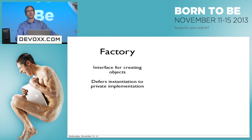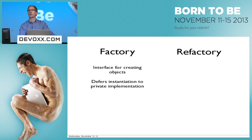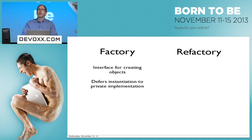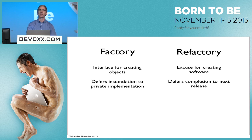Moving on, we have the factory pattern, which is of course an interface for creating objects without exposing the implementation details. We defer the instantiation of these objects to subclasses or to private implementations. One of the most common patterns in software development, used since the founding of our industry, is of course the refactory pattern. In this pattern we practice such things as renaming, changing class hierarchies, changing packages, and just completely rewriting code from scratch for the sheer hell of it. It's basically an excuse for creating software. We also use the pattern of deferral — deferring product shipment to the next release, and then when the next release comes, we defer again. A very effective pattern used over and over again by pretty much everybody in the room.